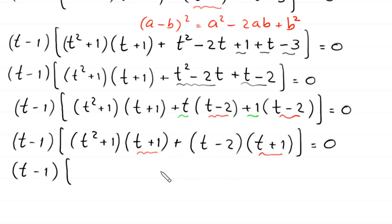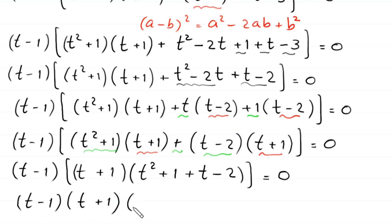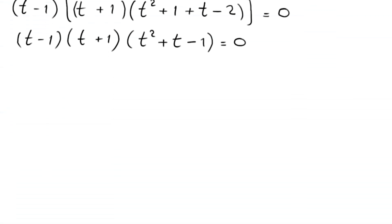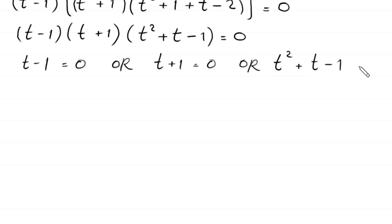Factoring out (t+1) from the bracket gives (t+1)[(t²+1) + (t-2)] = (t+1)(t² + t - 1). So the full equation becomes (t-1)(t+1)(t² + t - 1) = 0. From here, either t-1 = 0, or t+1 = 0, or t² + t - 1 = 0.